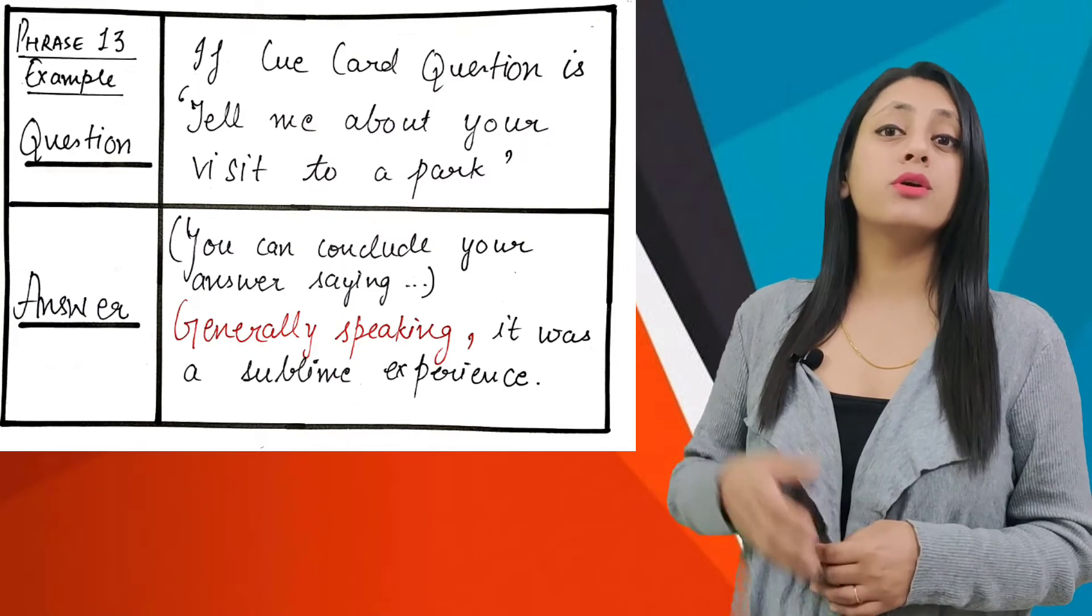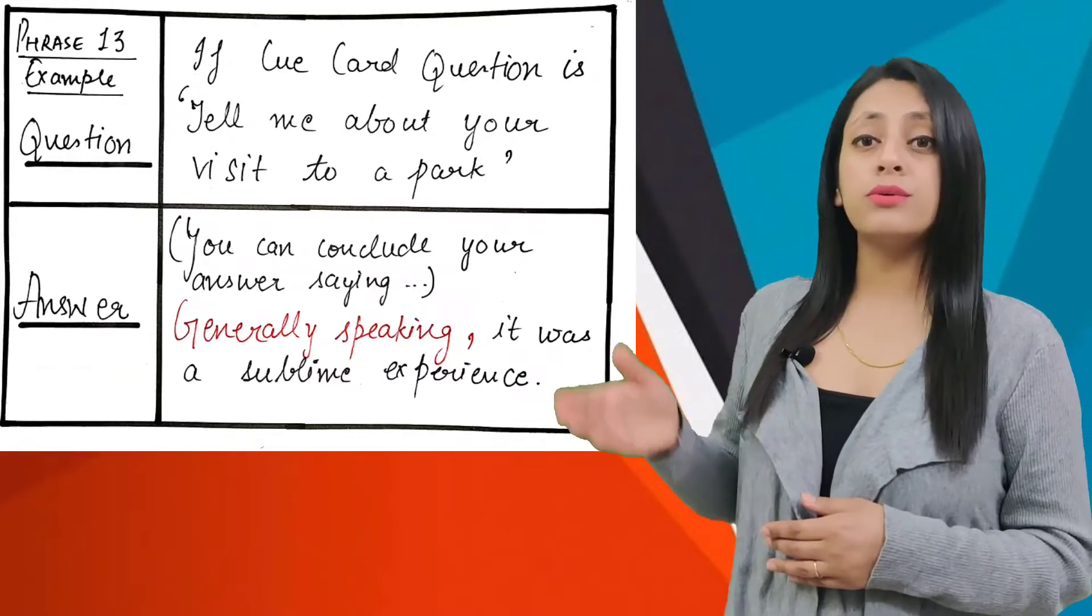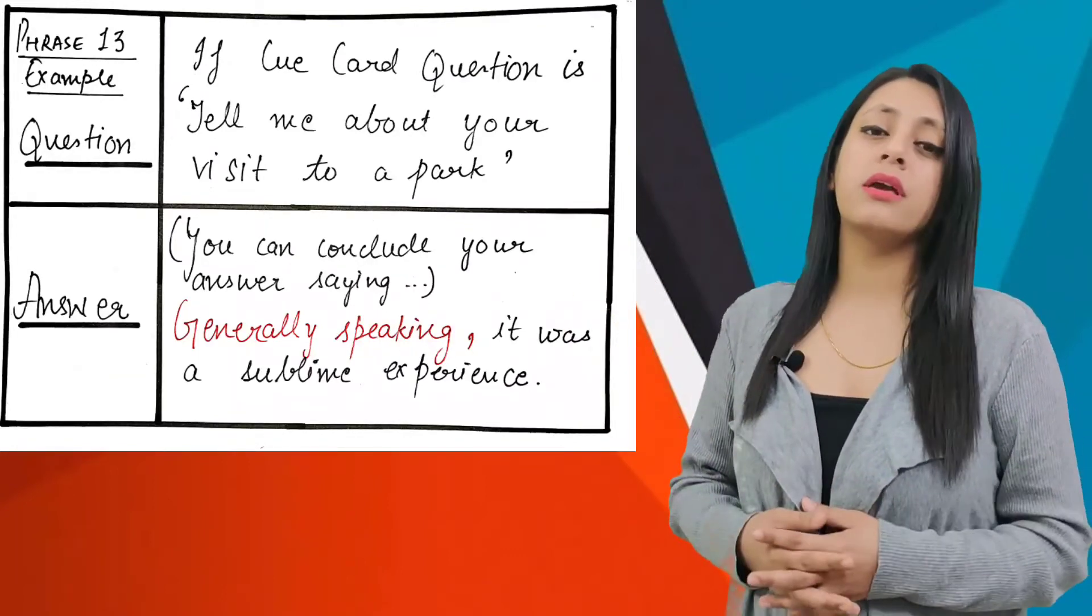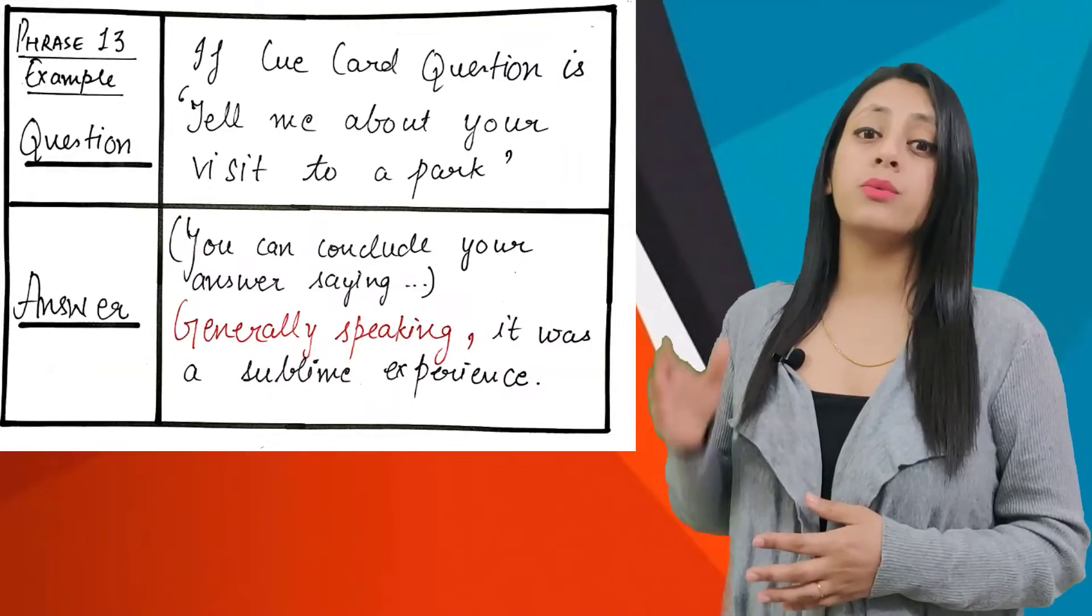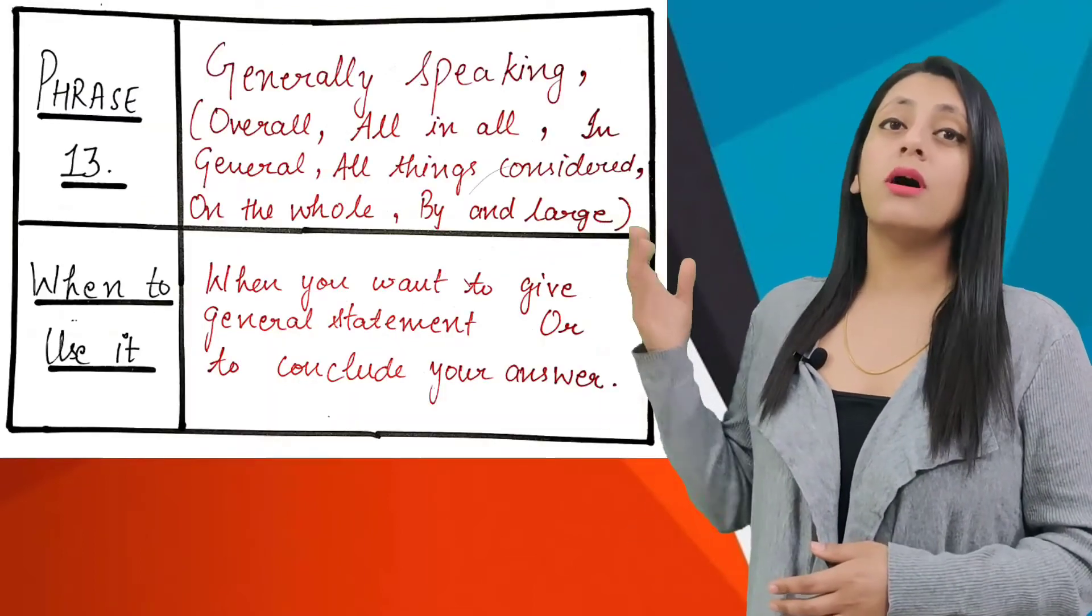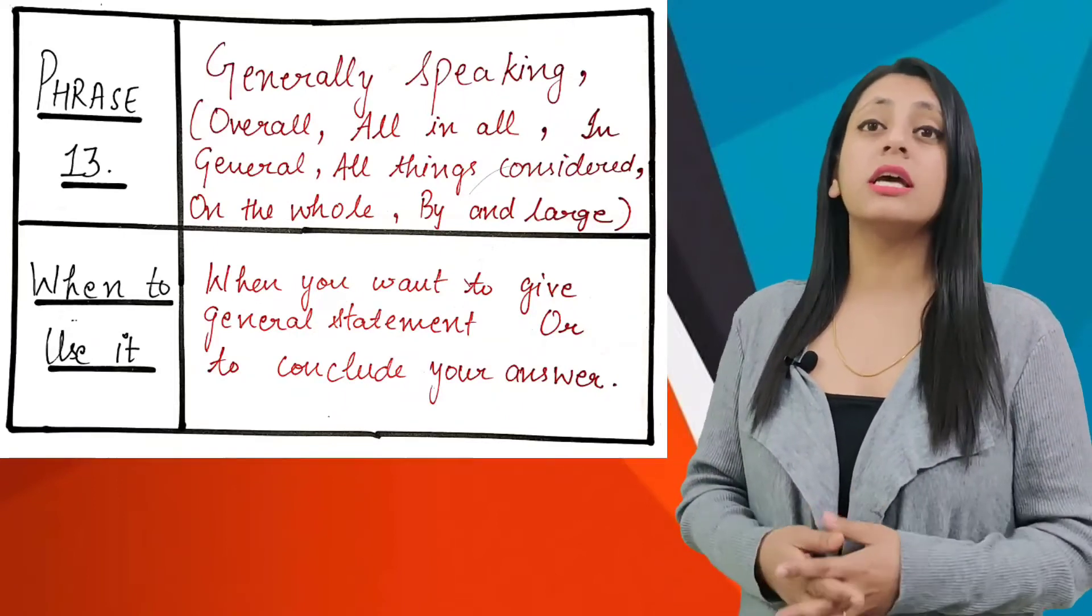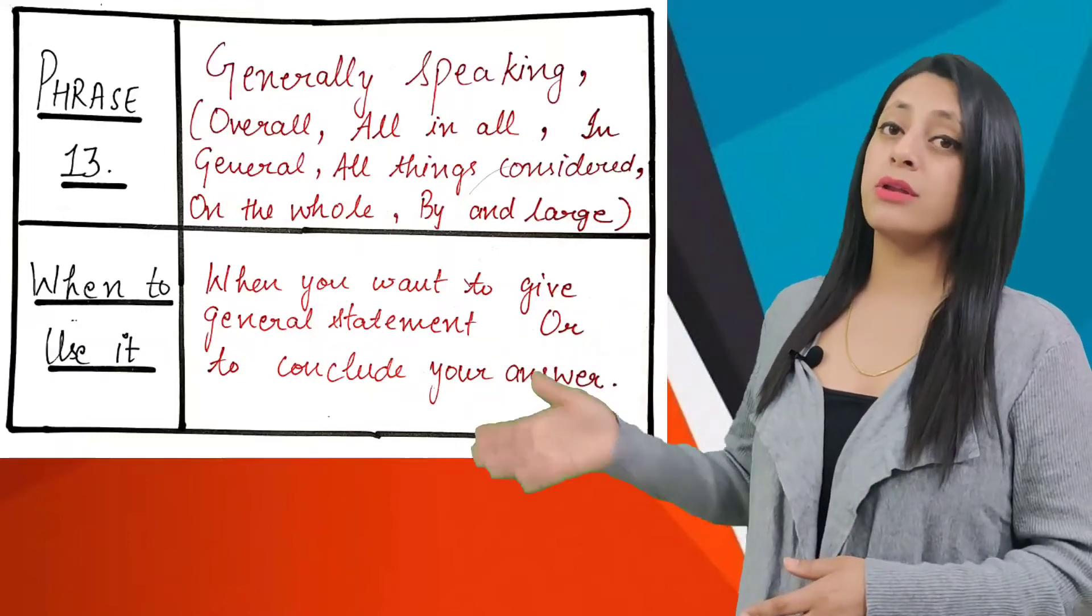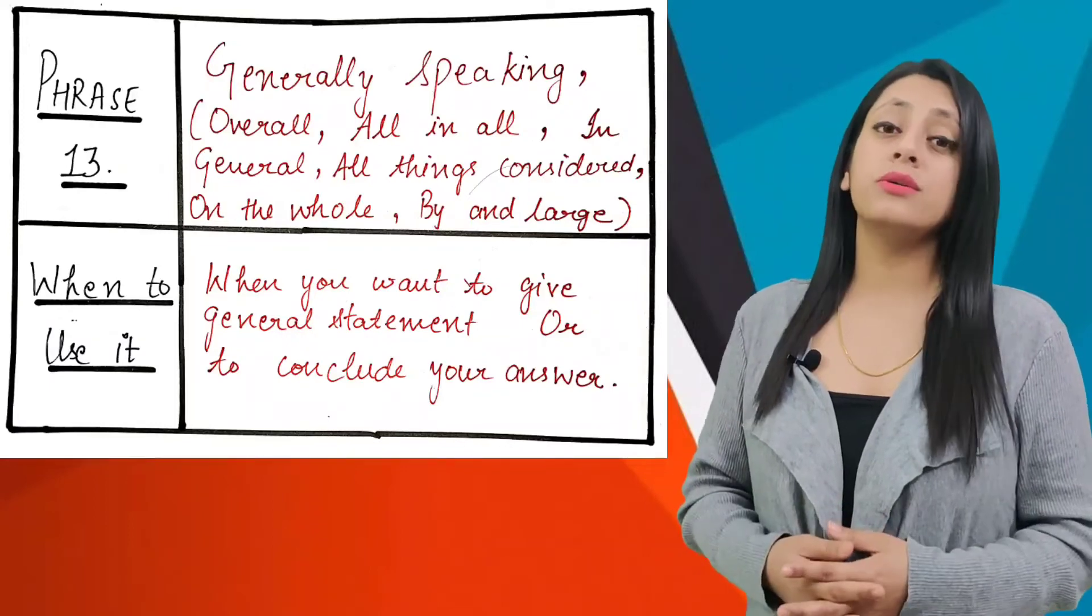For example, if the cue card question is tell me about your visit to the park, you can conclude your cue card using this phrase like: Generally speaking, it was a sublime experience. And instead of generally speaking, you can also use these words with the same meaning: overall, all in all, all things considered, by and large, in general, and on the whole. The meanings of all these are the same and could be used while giving a general statement or while concluding your answer.